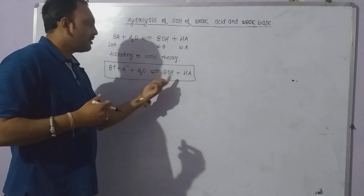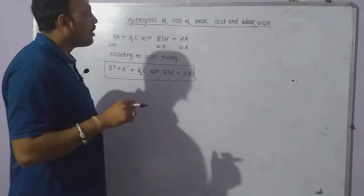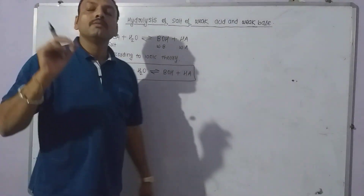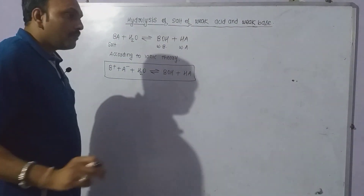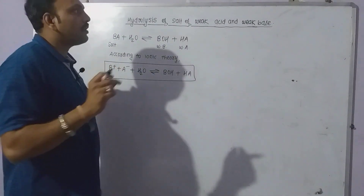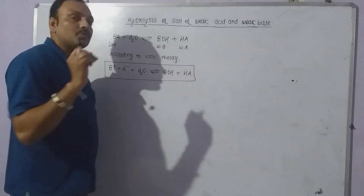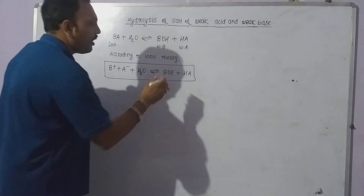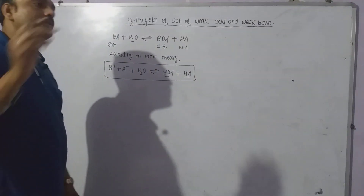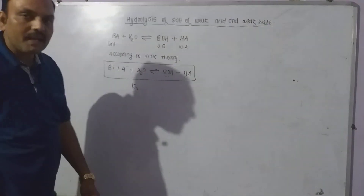The solution does not have H⁺ or OH⁻ ions in this equilibrium reaction. So what will be the nature of the aqueous solution of such a salt? The nature of the aqueous solution of a salt of weak acid and weak base depends upon the dissociation constants of the base and acid.